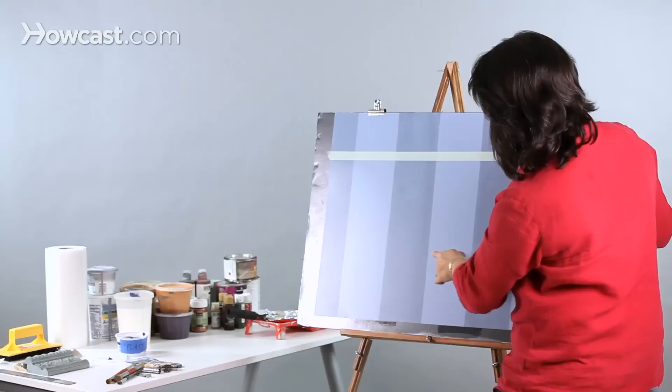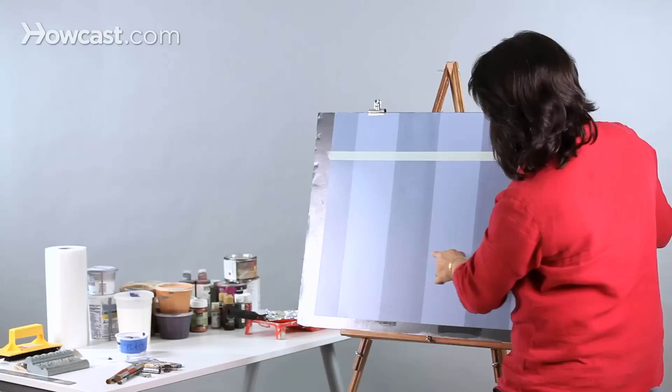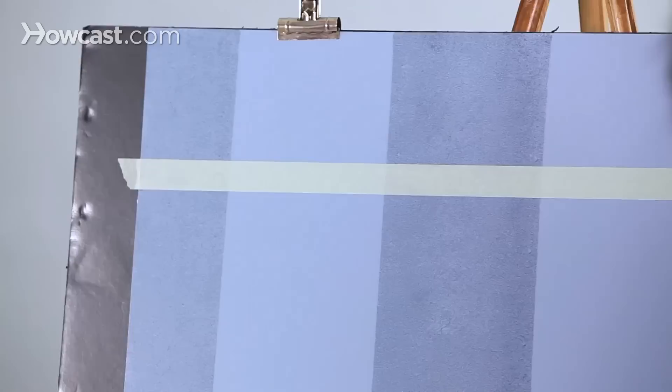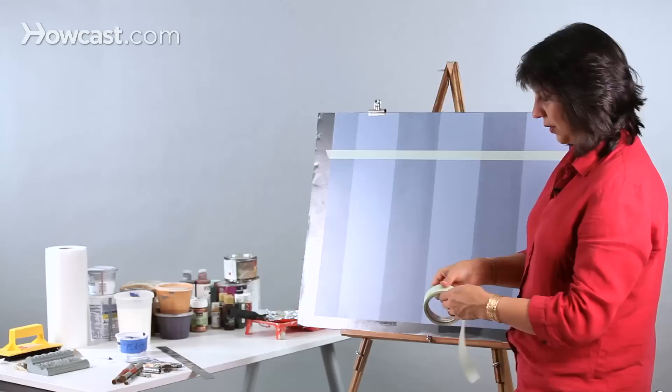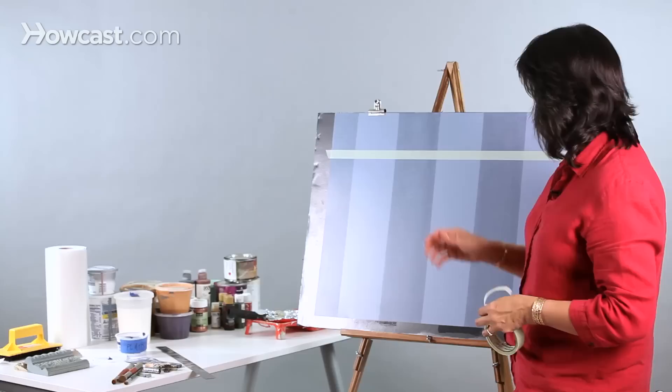These are five inches, and these stripes running this way will also be five inches. And I am using a low tack tape here, only because if I use a very heavy duty blue tape, it might pull the glaze off, which is already dried.